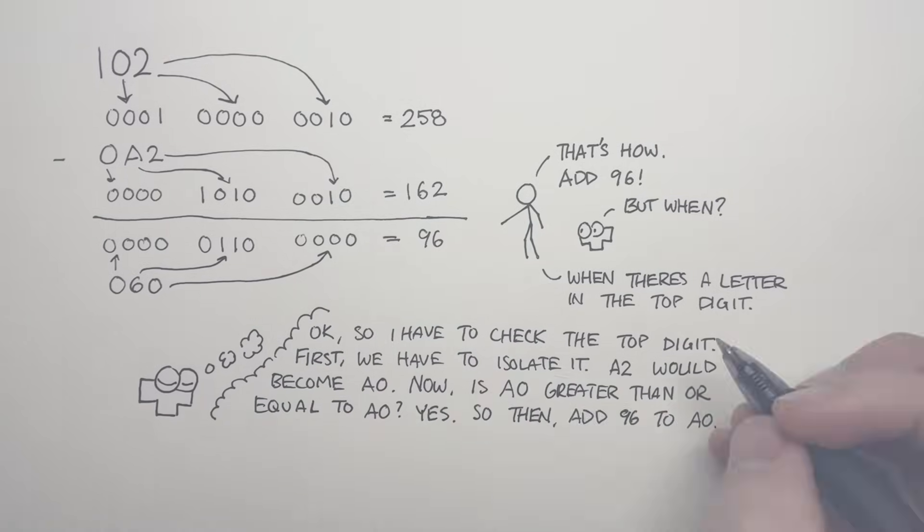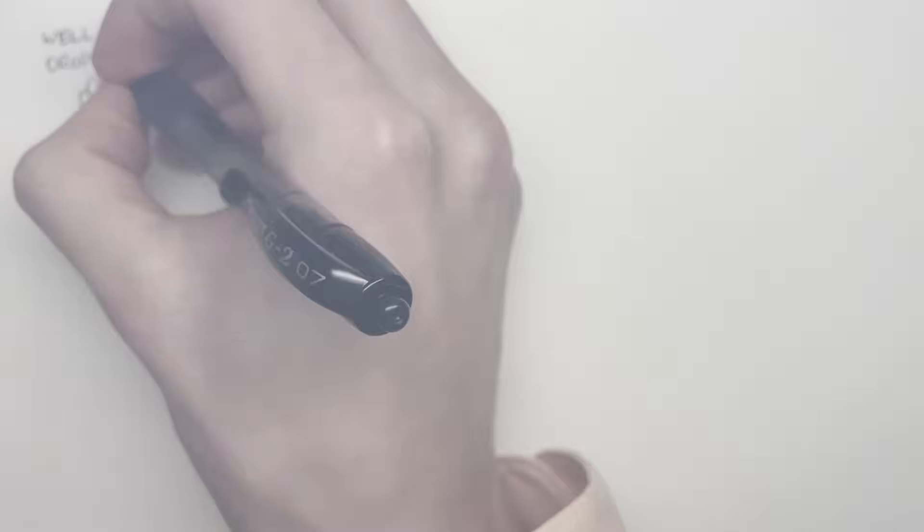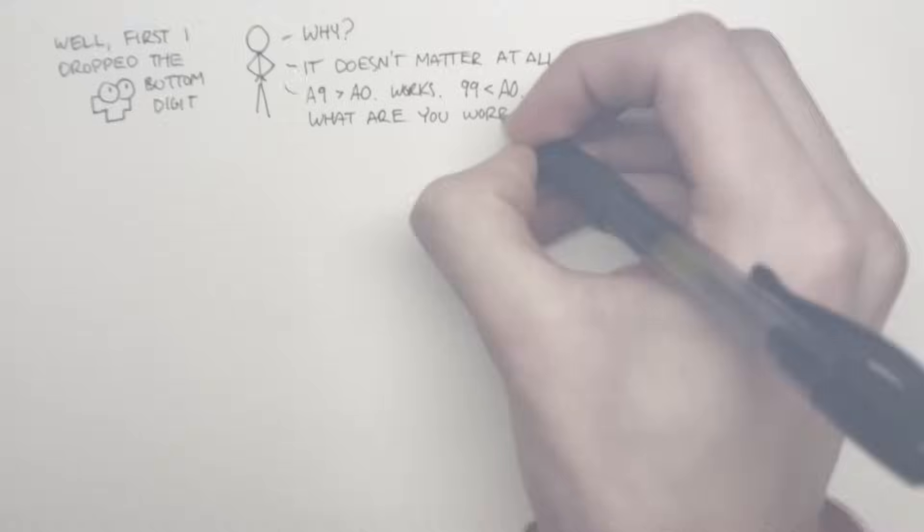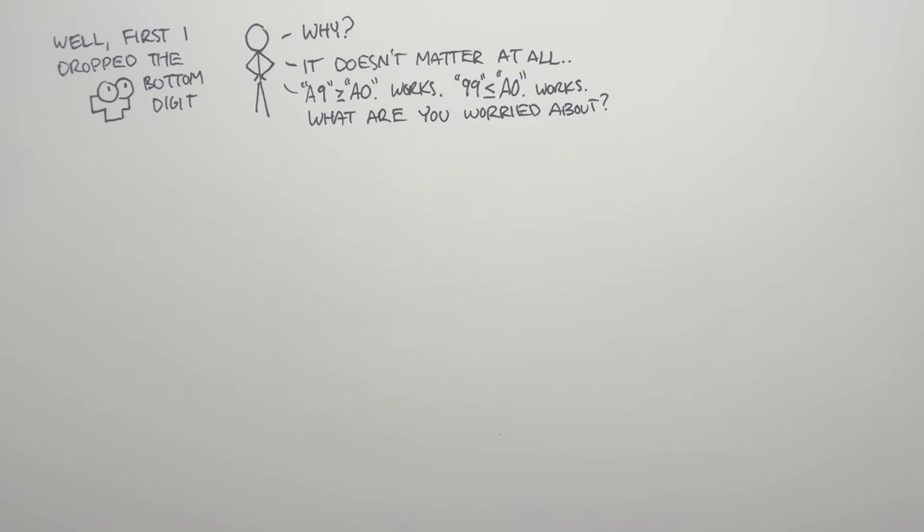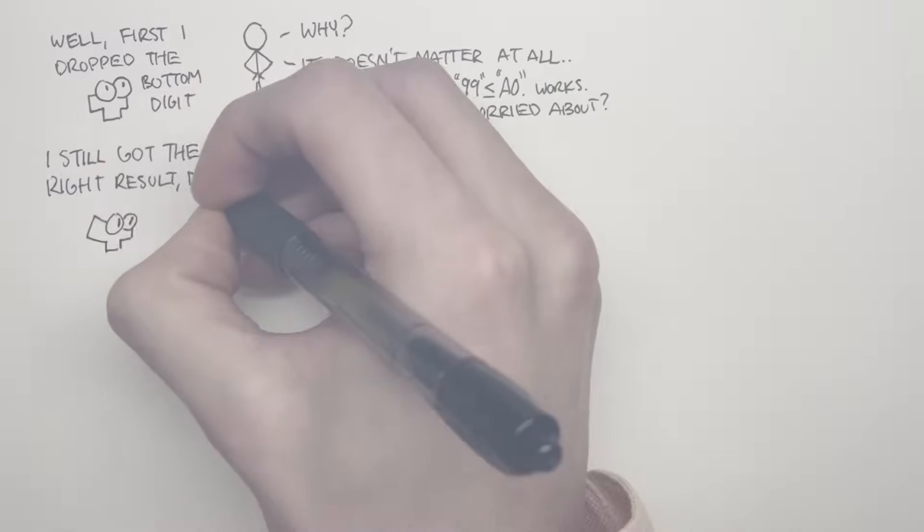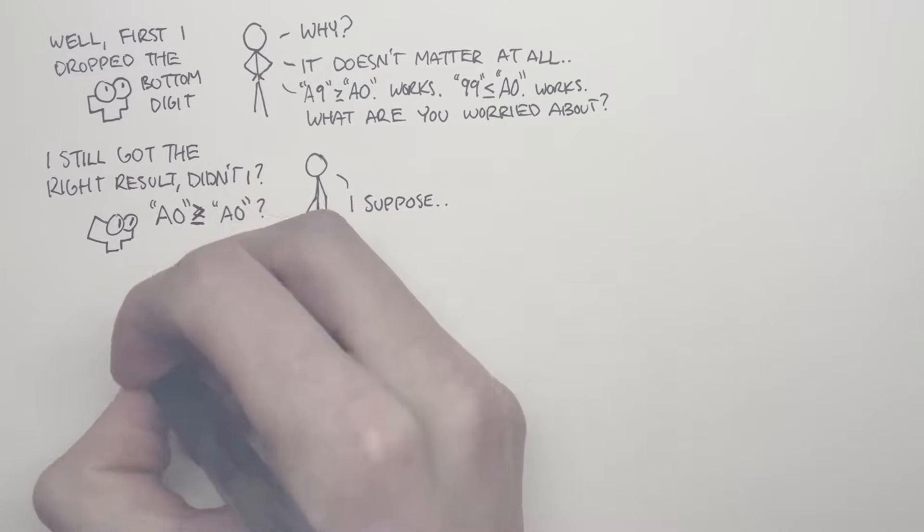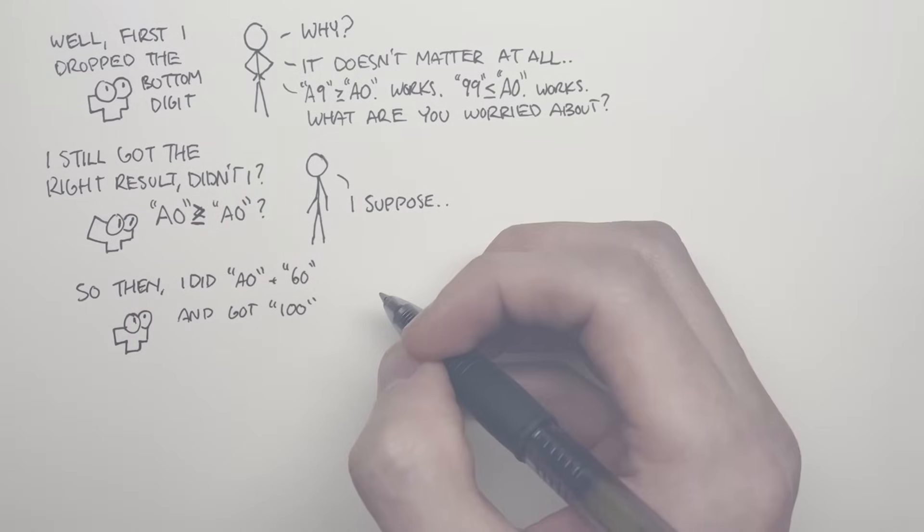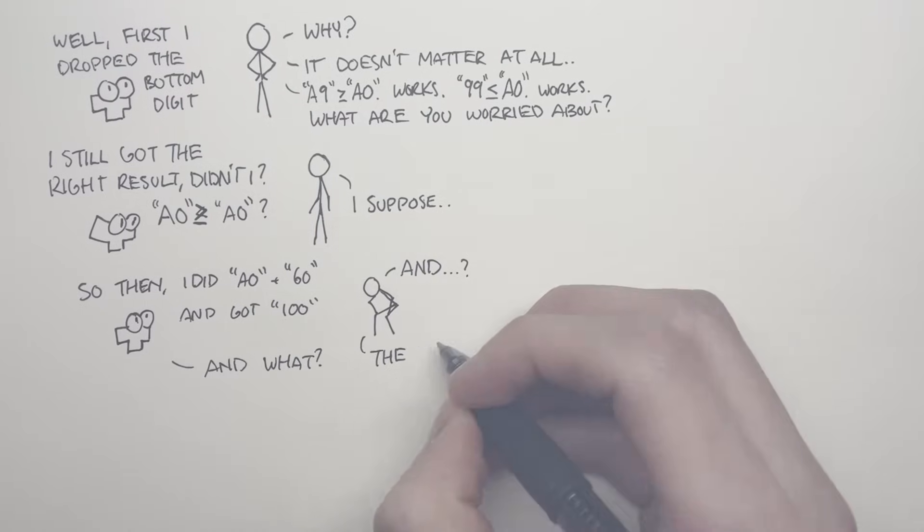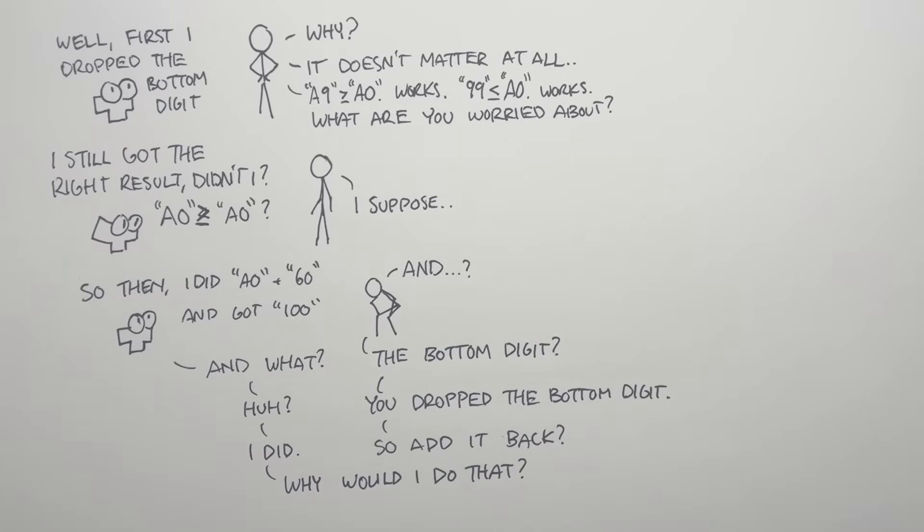NES Tetris adds in one extra step that does not need to be there. Before comparing the number to 160, it deletes the lower digit of the number. Now think about it. The lower digit of the number doesn't matter. If you had a 99, that's less than A0. That's correct. If you had an A9, that's more than A0. That's also correct. There is no case where their detection fails due to the less significant component of the number. For whatever reason, when the lower digit is dropped in the test, it is never reinserted into the number. So the net result is that any time you add to the third digit, the ones digit is discarded from the score for no reason.